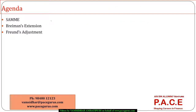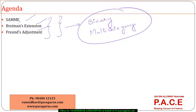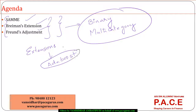In this context, we are talking about three different algorithms: the SAMe algorithm, Breiman's extension, and Freund's adjustment. These three are the ones that are majorly targeted. They can be used for binary classification as well as multi-category classification. These are all different kinds of extensions to the AdaBoost algorithm, with small changes so that they can be extended to multiple categories.